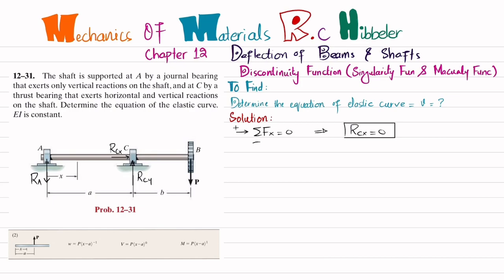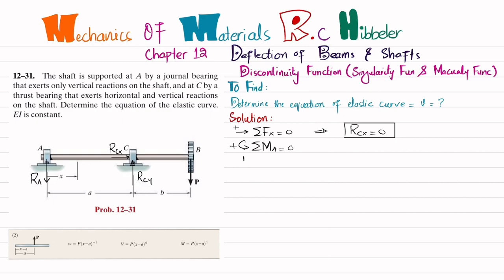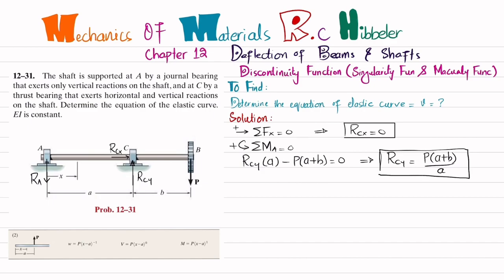We find another reaction force using the sum of moments about point A equals zero, taking counterclockwise as positive. Rcy times distance A produces a counterclockwise moment (positive), and P times (A plus B) produces a clockwise moment (negative). So: Rcy·A − P·(A+B) = 0, giving Rcy = P(A+B)/A.